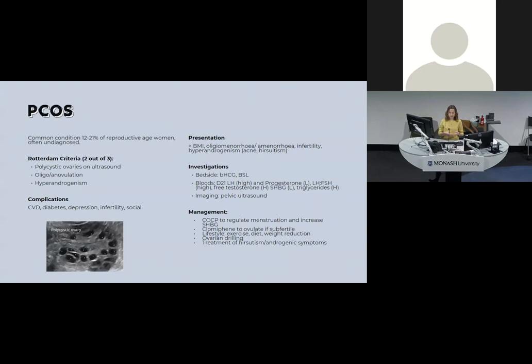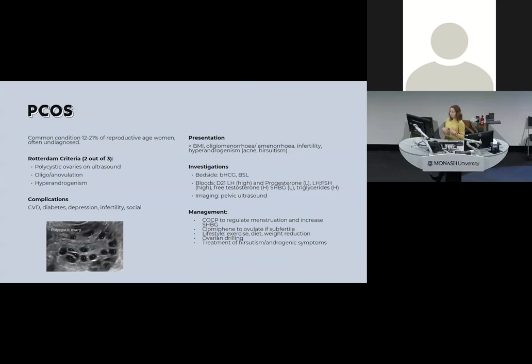A patient with PCOS may present with a raised BMI, irregular or absent periods, infertility, or symptoms of hyperandrogenism or insulin resistance. Investigations include beta-HCG, BSLs, hormone levels, and a pelvic ultrasound looking for cystic ovaries. Management starts with lifestyle optimisation — exercise, weight, and diet — then usually the pill to regulate cycles and free up sex hormone binding globulin. If presenting with infertility, you'd also give clomiphene to stimulate ovulation, or consider ovarian drilling.